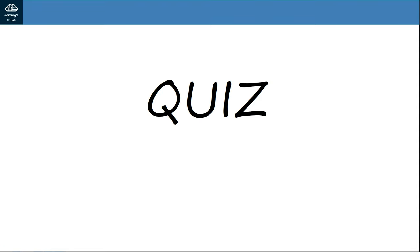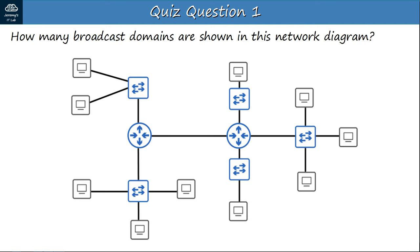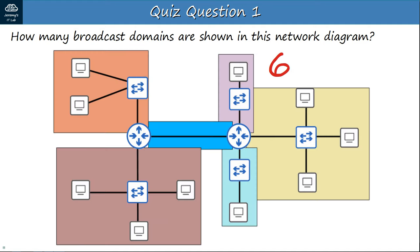Question 1: How many broadcast domains are shown in this network diagram? Pause the video and count how many broadcast domains you see. Note that no VLANs have been configured, so all hosts are in the same default VLAN, VLAN 1. The answer is 6 broadcast domains. Basically, each router interface and everything connected to it are in one broadcast domain, since no VLANs have been configured.